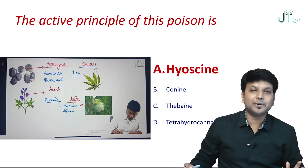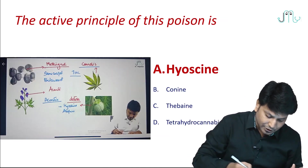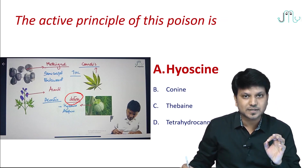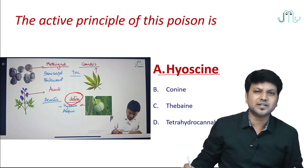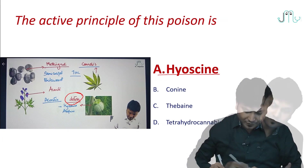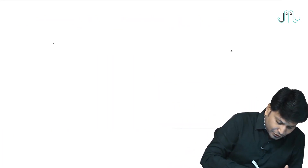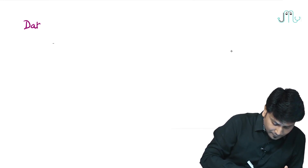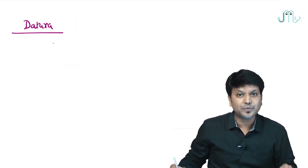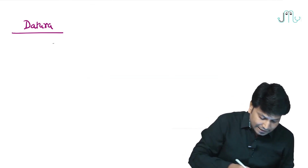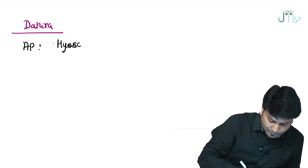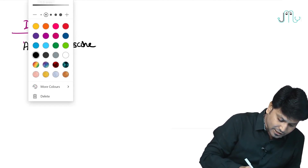This is very simple — a thorn apple image was given, and thorn apple is nothing but Datura. The active principle of Datura you know very well: it is hyoscine and atropine, so the correct answer is hyoscine. Datura belongs to the group deliriant, and the active principle is hyoscine and atropine.